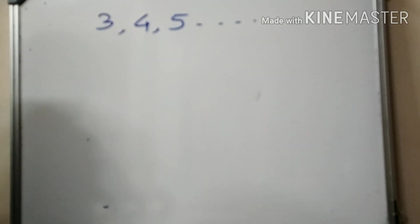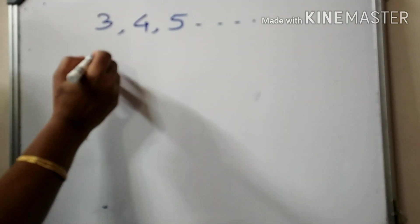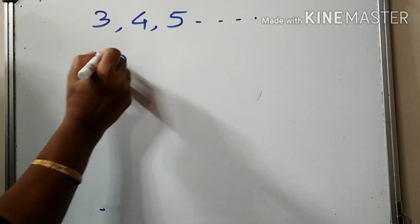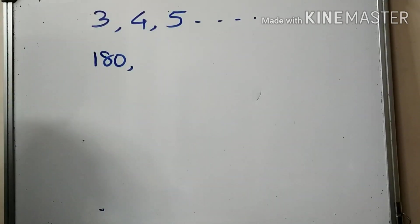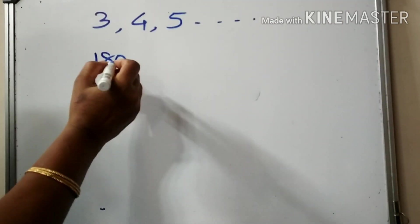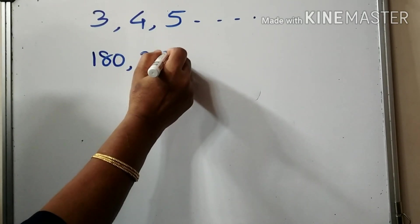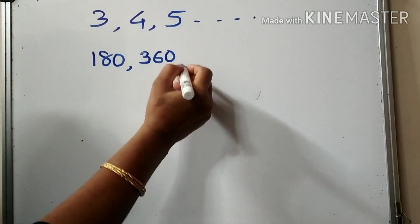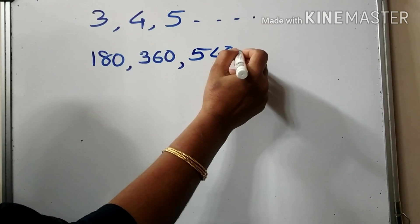For two angles, this equals zero angles. The triangle equals 180 degrees. So the sum of inner angles: 3 sides gives 180 degrees, 4 sides gives 360 degrees, and 5 sides gives 540 degrees.